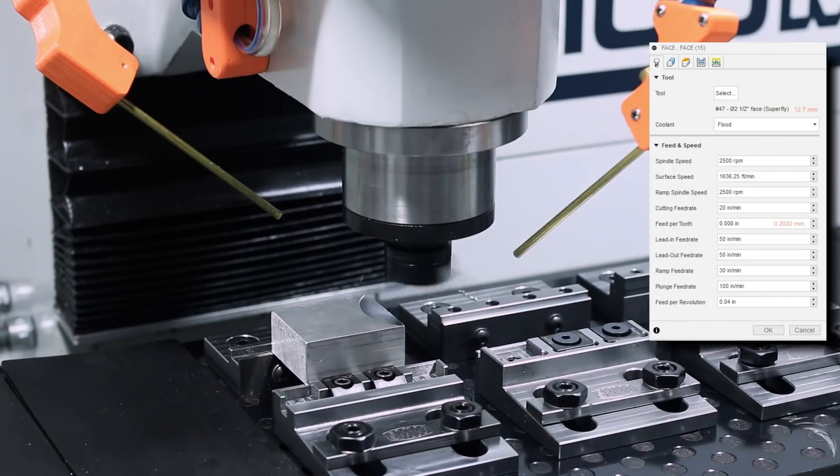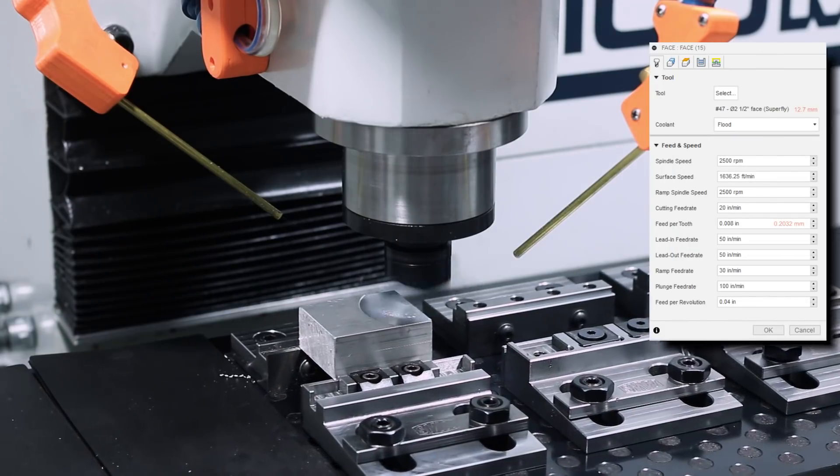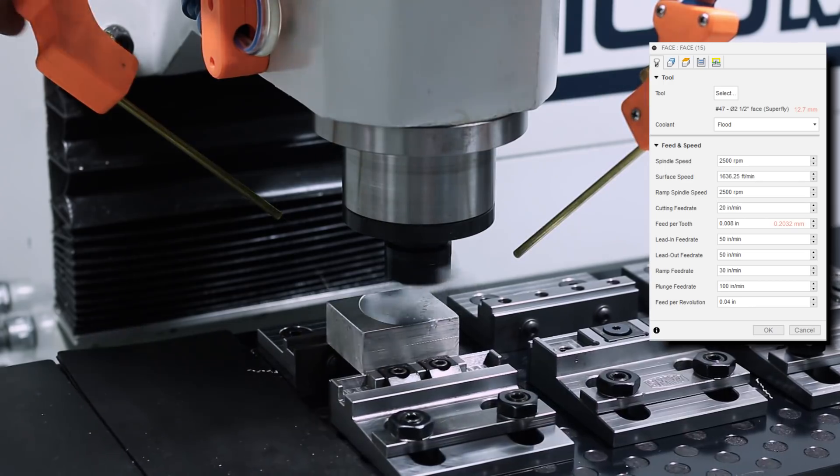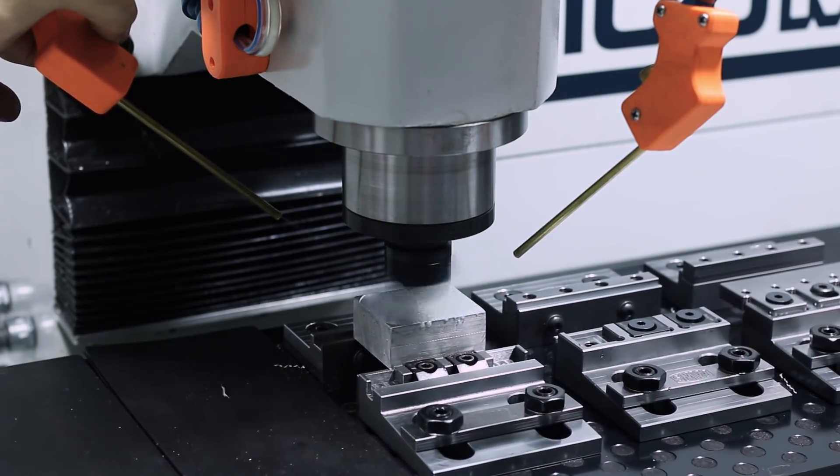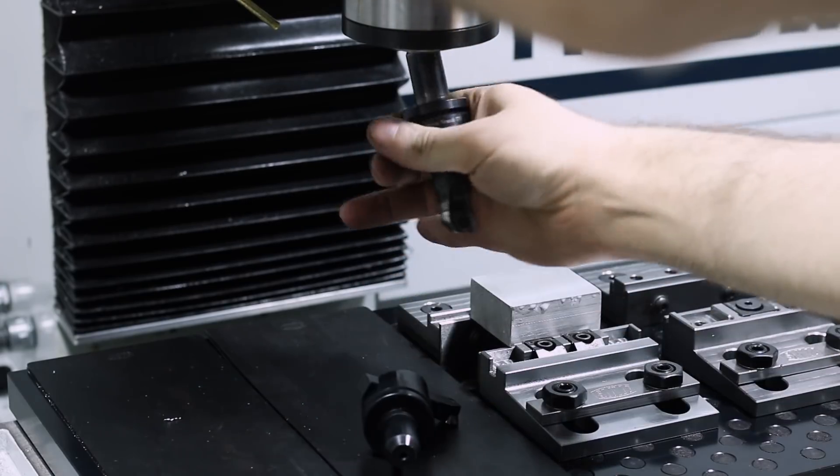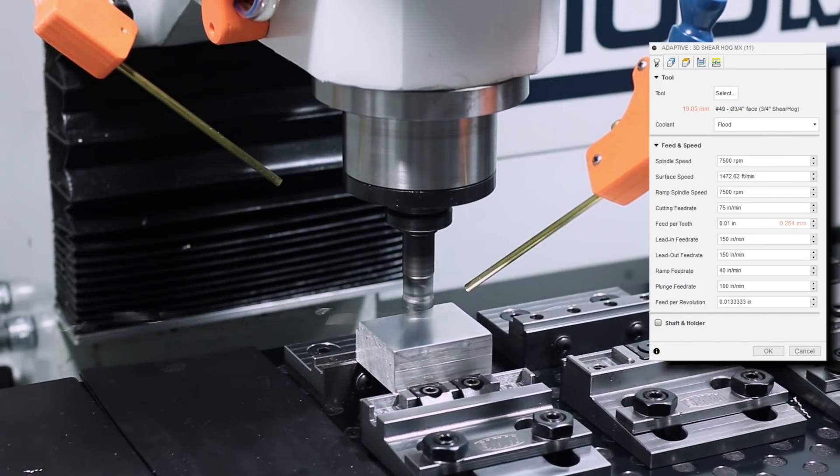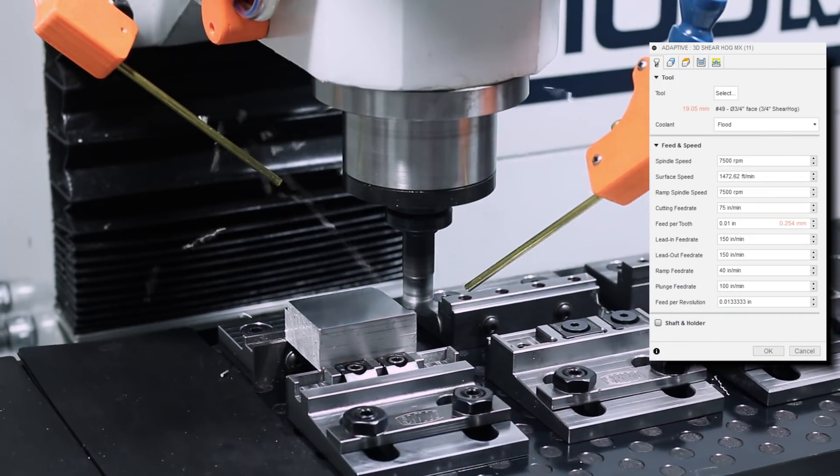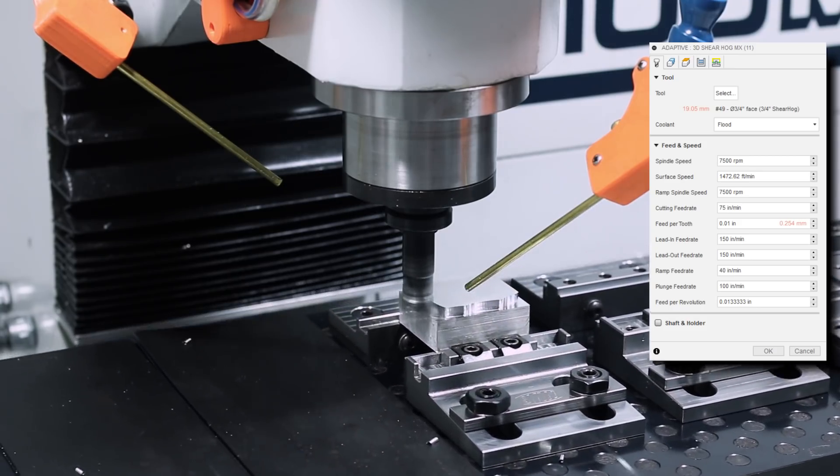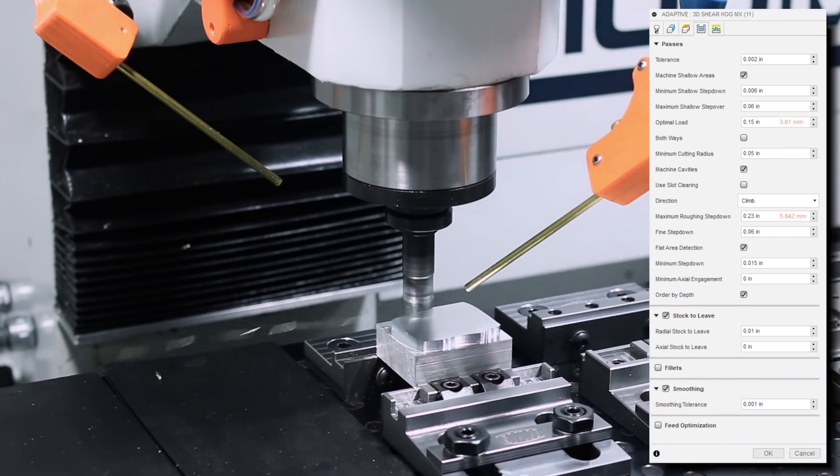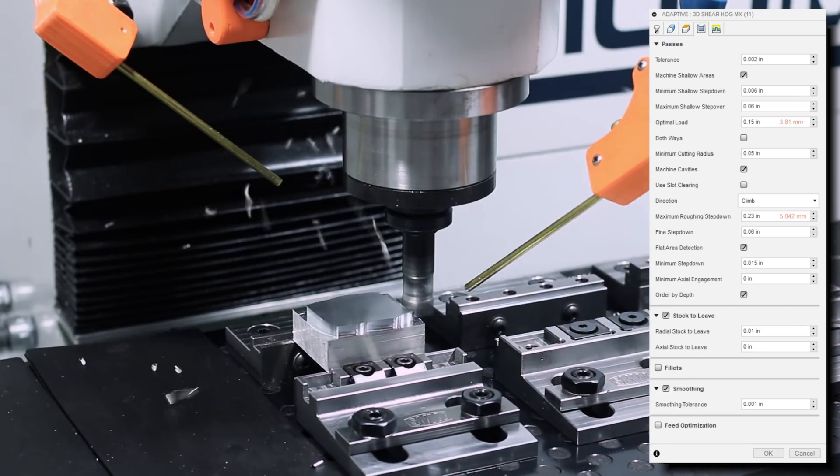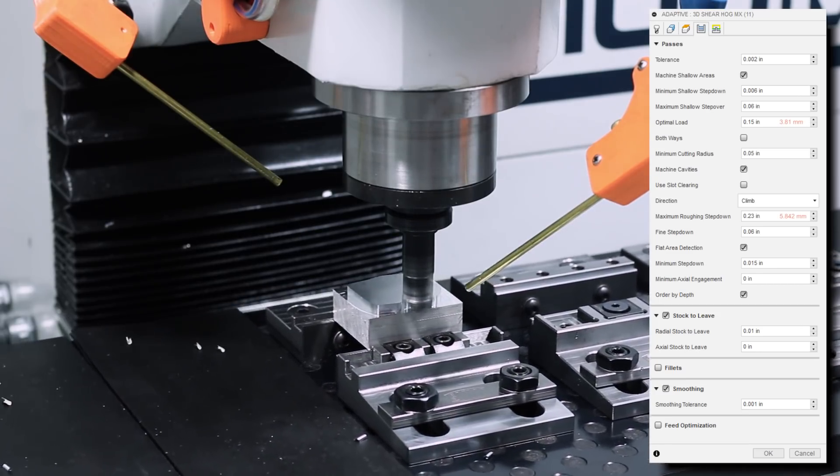First, we'll face the top of the part with the Superfly at 2500 RPM and 8,000 feet per tooth. Then rough out the bulk of the part with the Sheerhog at this machine's maximum RPM of 7500 and 10,000 feet per tooth. And under the passes tab, we're running an optimal load of 150,000 and a maximum roughing step down of 230,000.